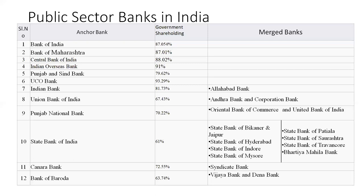Bharti Mahila Bank was also merged with State Bank of India after nationalisation. Canara Bank merged with Syndicate Bank — today Syndicate Bank no longer exists. Bank of Baroda absorbed Vijaya Bank and Dena Bank. Totally we have right now 12 public sector banks in India, and the six remaining independent banks include Bank of India, Bank of Maharashtra, Central Bank of India, Indian Overseas Bank, Punjab and Sindh Bank, and UCO Bank.